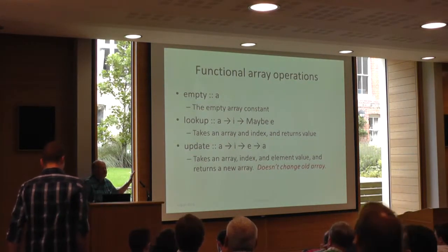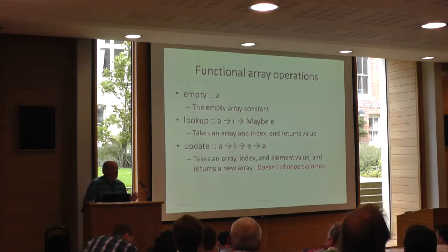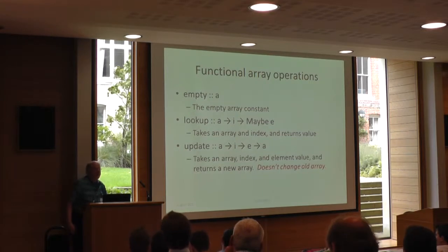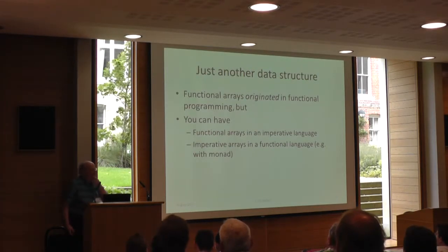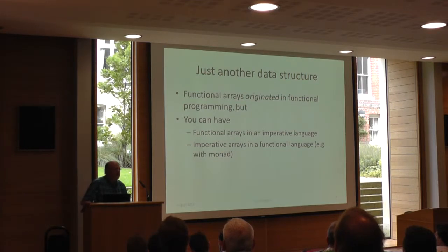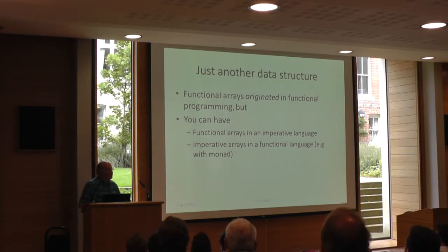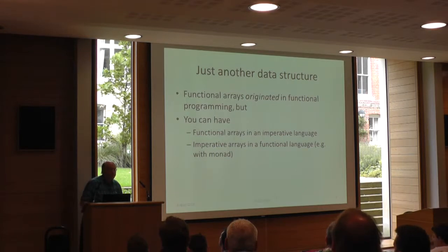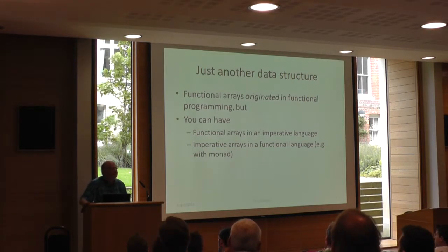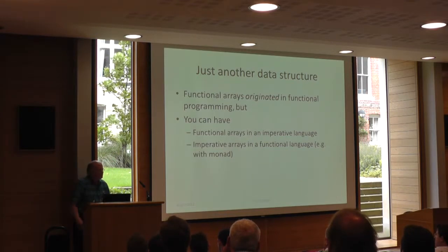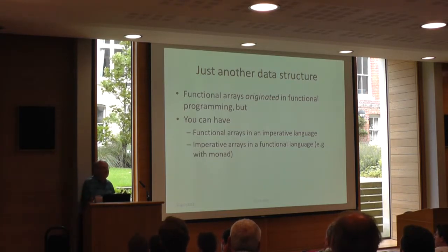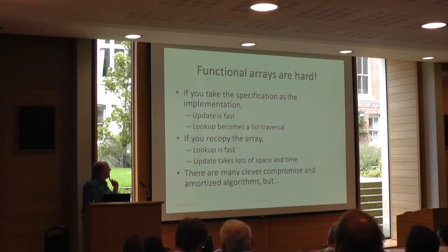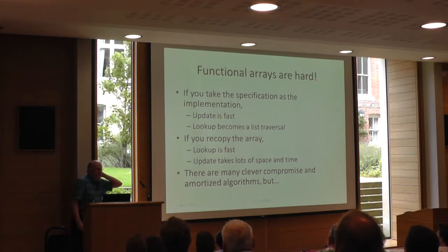Actually there are more operations than this because of the extensible and sparse stuff, but I'm omitting a lot of that. So all I'm going to talk about is lookup and update. Now this is just another data structure. Historically these were discovered in the context of functional programming, but actually you could have functional arrays in an imperative language. Most people doing array computing in Haskell are using imperative arrays in a functional language — functional arrays are just a different data structure.